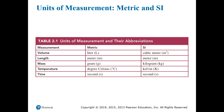This table shows the basic units for these two systems, and here you can see the differences. Both systems use meters for length and seconds for time, but metric uses liters for volume while SI uses cubic meters. Metric uses grams for mass while SI uses kilograms, and metric uses Celsius for temperature while SI uses Kelvin.